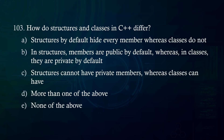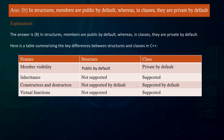How do structures and classes in C++ differ? A. Structures by default hide every member whereas classes do not. B. In structures, members are public by default, whereas in classes they are private by default. C. Structures cannot have private members, whereas classes can. D. More than one of the above. E. None of the above. Answer: B — In structures, members are public by default, whereas in classes they are private by default.